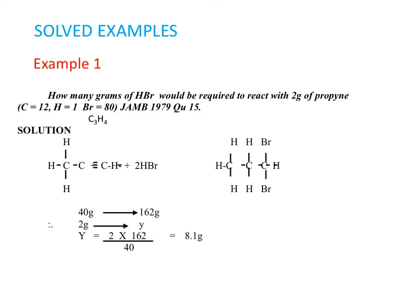Example 1. How many grams of hydrogen bromide would be required to react with 2g of propyne? We'll have C to be 12 molecular mass, hydrogen is 1, bromine is 80.